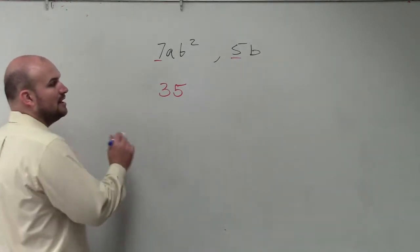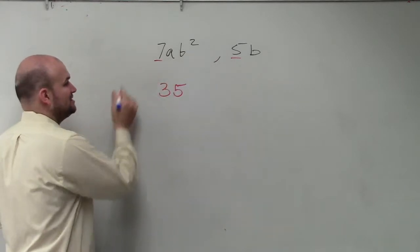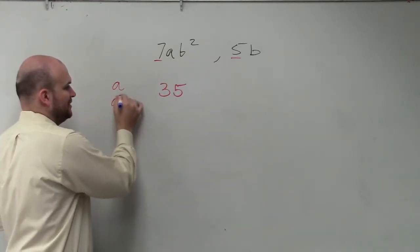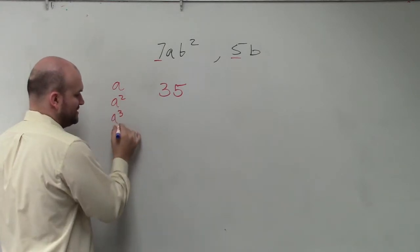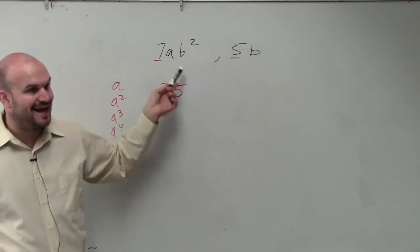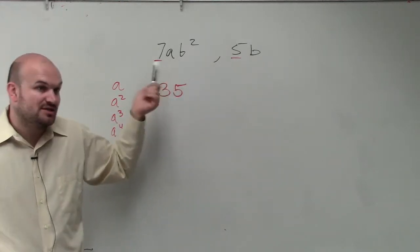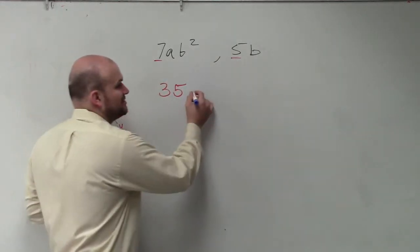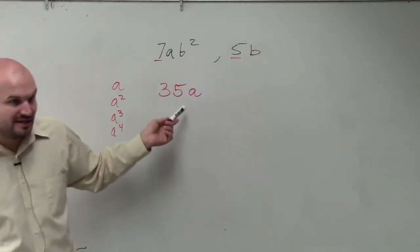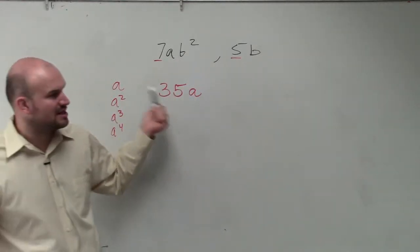Now, the smallest number that A divides into is obviously A, right? Then you go to A squared, A cubed, A to the fourth, and so forth. Well, since they both don't share in A, the smallest number that they both can divide into is going to be A. Because you can still divide 5b into this, and we'll talk about more of that in a second.